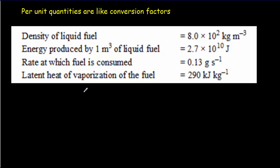Here's data from an IB exam question from the power, energy, and climate change unit. Most teachers move quickly through that unit because the IB syllabus is very crammed. Dimensional analysis is especially useful in this unit. The key insight is that per-unit quantities become like conversion factors, and we need those conversion factors to do dimensional analysis.